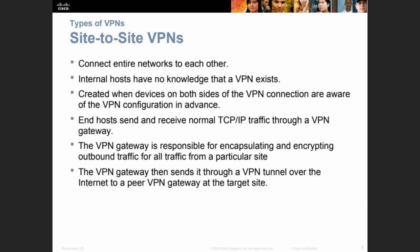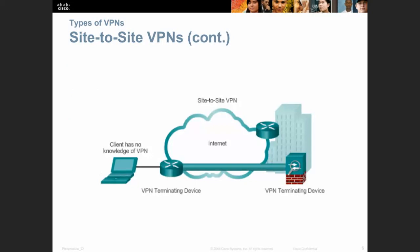Do you think that traffic going through the tunnel will be faster or slower than normal traffic? There will be some delay, so you don't need to send everything through the tunnel — only the things that you want to encrypt. Here we have a site-to-site VPN with a VPN terminating device connecting two networks. For the client, it is transparent — the client doesn't know how the traffic is going; he just knows he can access the other network and will receive his response.